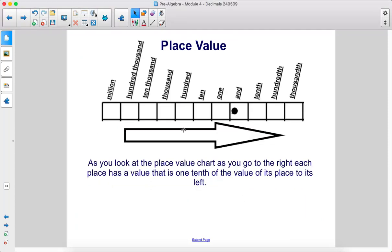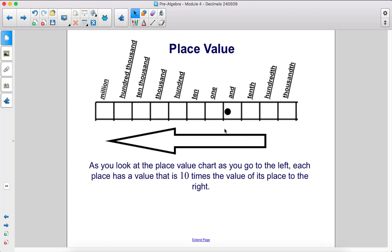As you look at the place value chart, as you go to the right, each place has a value that is one tenth of the value of its place to the left. As you look at the place value chart as you go to the left, each place has a value that is ten times the value of its place to the right.